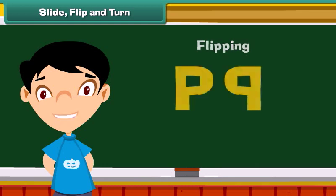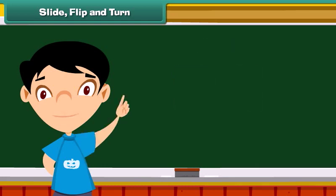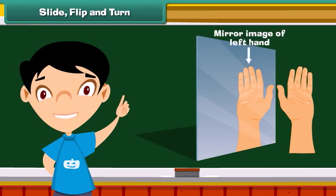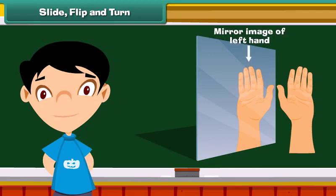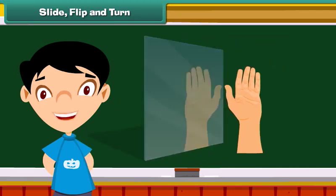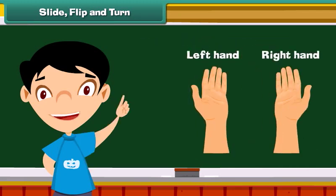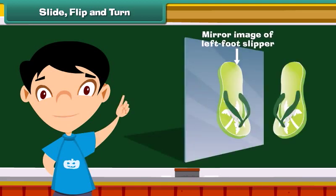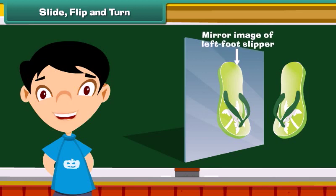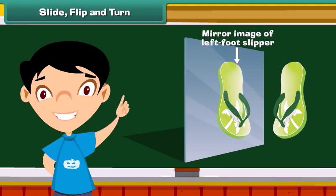Creating a mirror image of an object is called flipping. In real life we come across many instances of flipping. For example, a right hand is a mirror image of a left hand, so if we flip our left hand we get our right hand. Similarly, the right foot slipper is a mirror image of the left foot slipper. Flipping or sliding does not alter the shape of the object.